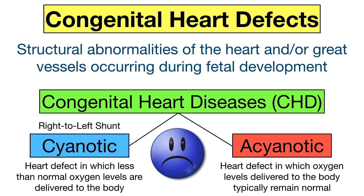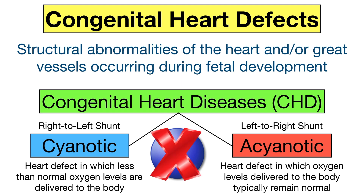Acyanotic defects are heart defects that can affect the normal flow of blood, but blood oxygen levels delivered to the body typically remain normal. Acyanotic heart defects often contain left-to-right shunts, in which oxygenated blood from the left heart mixes with deoxygenated blood in the right heart. So with acyanotic defects, the blood delivered to the rest of the body still remains oxygen-rich, which is why there is no cyanosis.